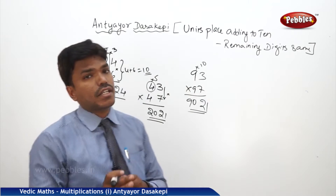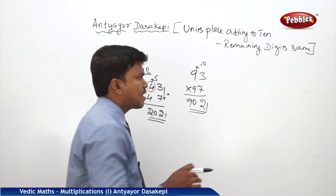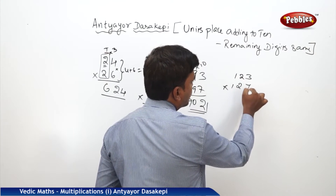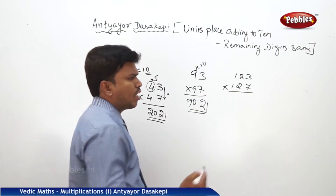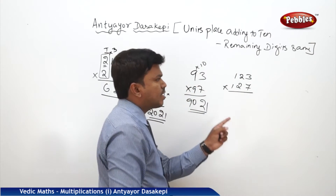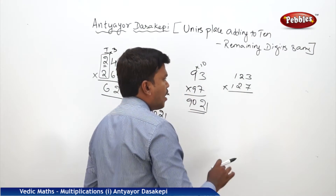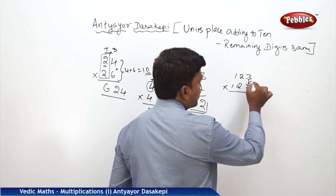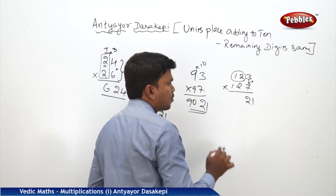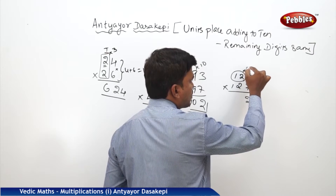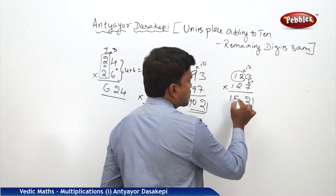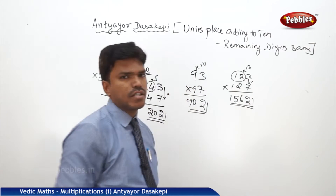You can even extend this technique to the hundreds place. For example, multiply 123 into 127. The ones place is adding to 10, and the remaining digits — 12 and 12 — are the same in both numbers. First multiply the ones digits: 3 times 7 is 21. Then the remaining number 12 is multiplied with its next number, 13. So 12 into 13 is 156. Your answer is 15621.